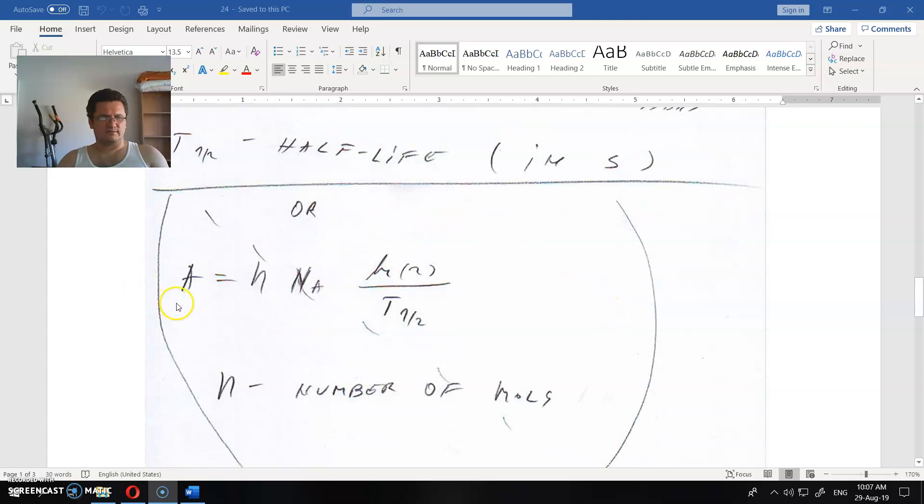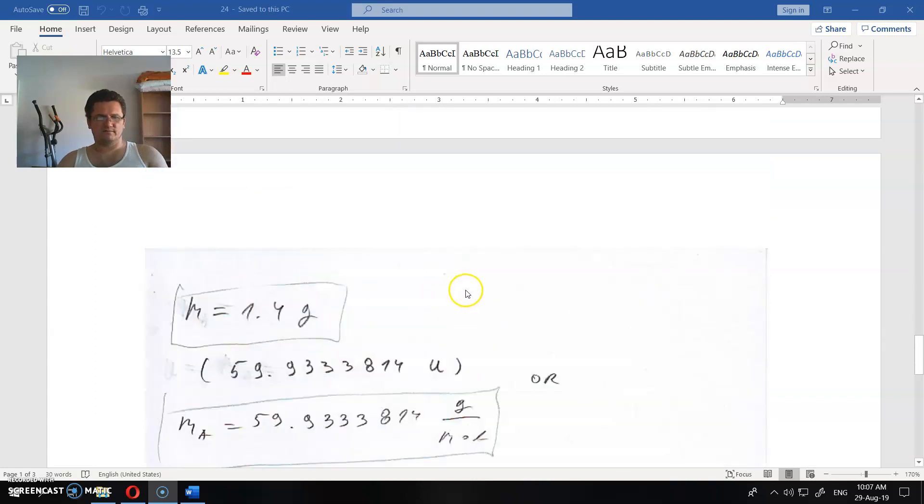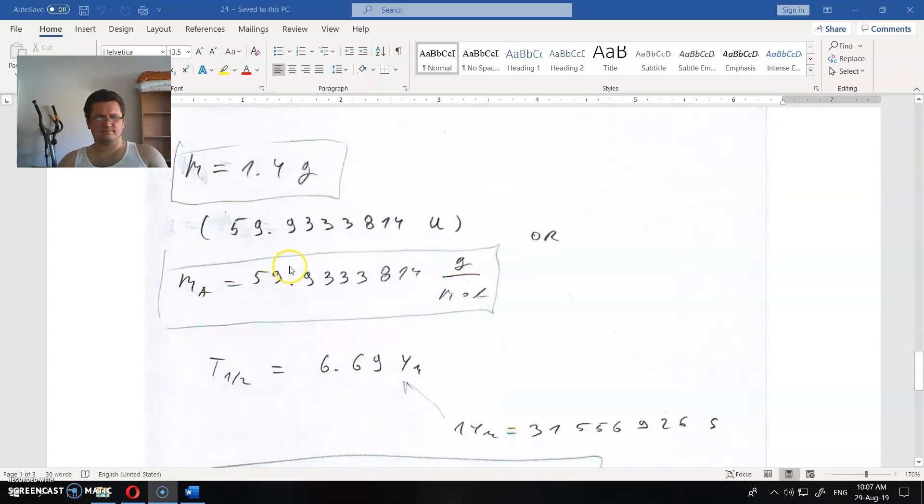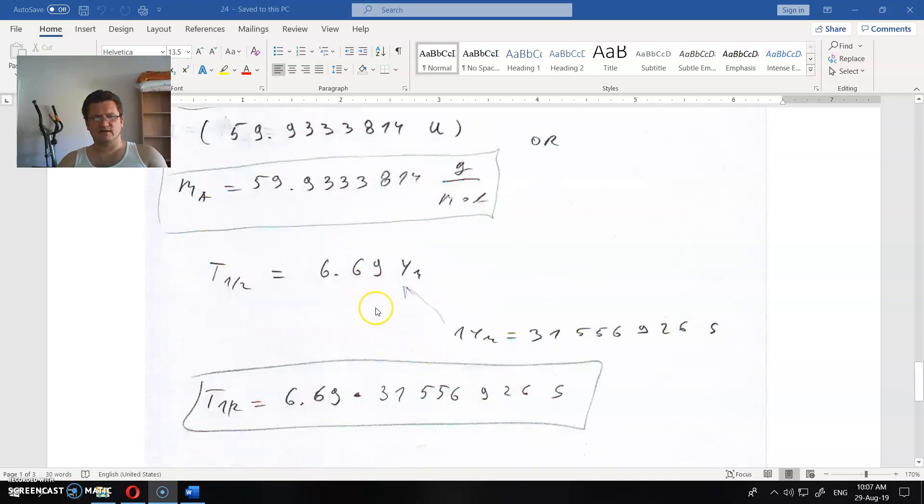Or you could do the equation that this is activity, this is the number of moles, this is Avogadro's number and so on. So this is the mass, this is atomic mass, this is half-life in seconds.